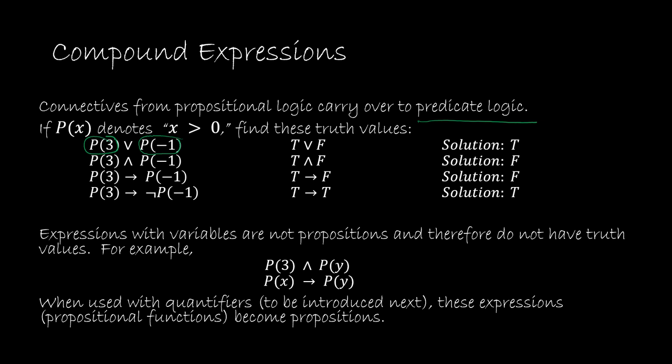Same idea though so this is not complicated. P(3) tells us that if P(x) denotes x is greater than 0 then P(3) means 3 is greater than 0 which is true and then P(-1) would be negative 1 is greater than 0 which is false and then I'm just using that connective, my or connective, true or false, well that solution is true.